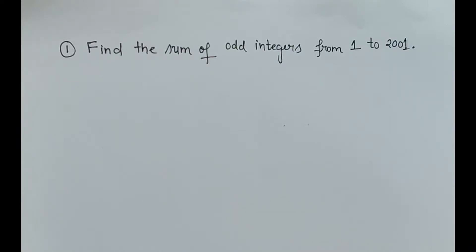Hello friends, in this video we are going to see one example on arithmetic progression. The question is very clear here: find the sum of odd integers from 1 to 2001. We have to find the sum of odd integers.